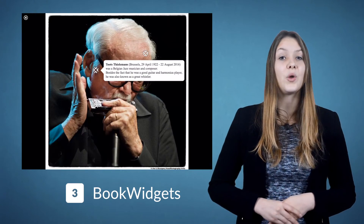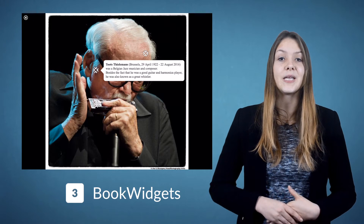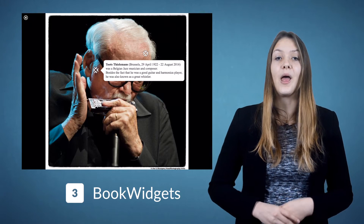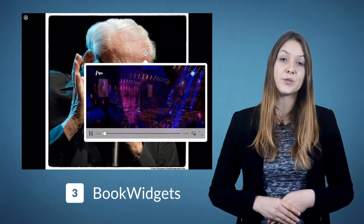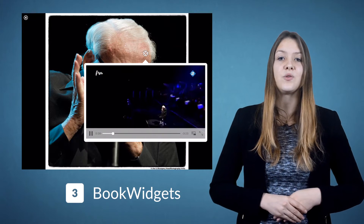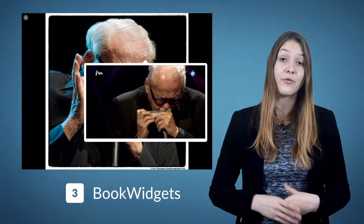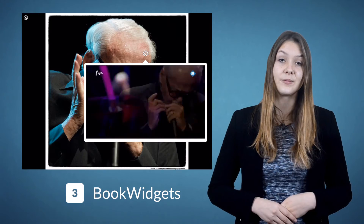To add video, pictures, text, audio and web page pop-ups to your images, use the Hotspot Image widget. It's a nice way to overlay extra information on top of a photograph or a painting.